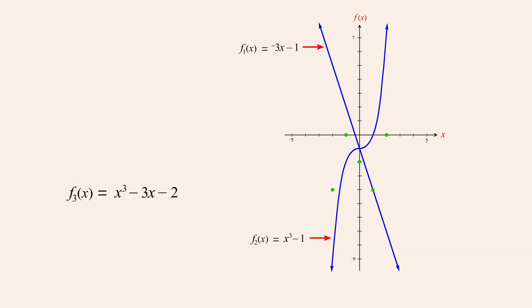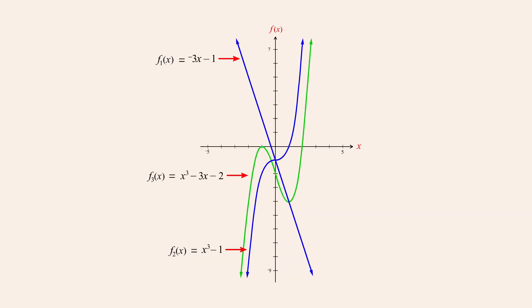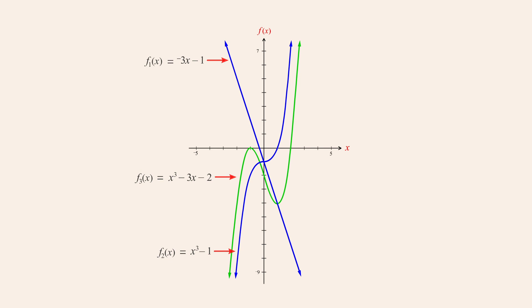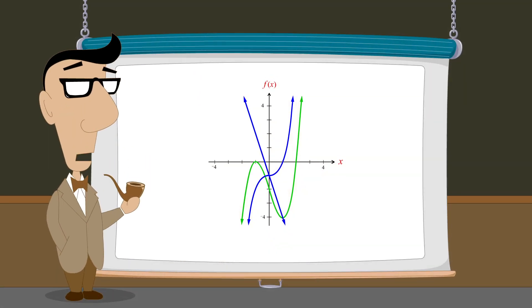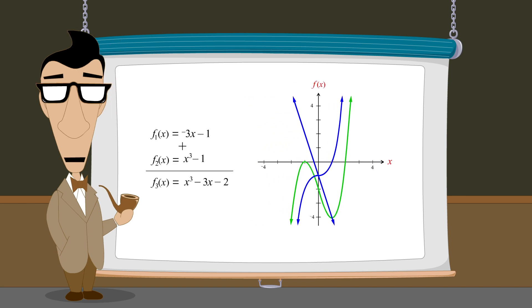If we were to continue adding the values of these two functions for every possible value of x, we would produce the graph of the function x cubed minus three x minus two. Fortunately, the process of adding polynomial functions is much easier than adding the values of those functions at every point.